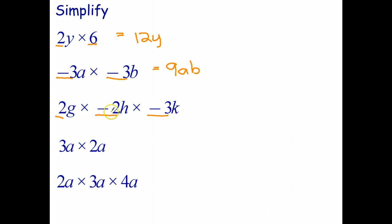Third question, 2 by negative 2 by negative 3. 2 times negative 2 is negative 4. Negative 4 times negative 3. Well, negative times negative is positive. So that's positive 12 times g times h times k. And that's the correct order, because we want to write the variables alphabetically.